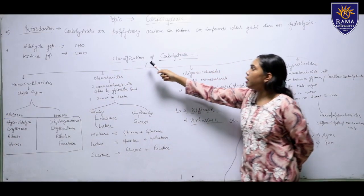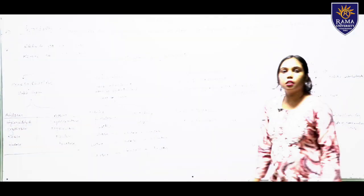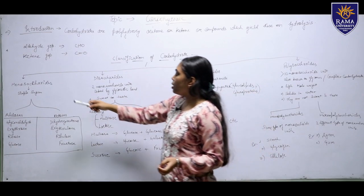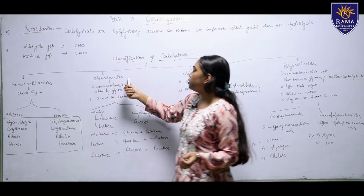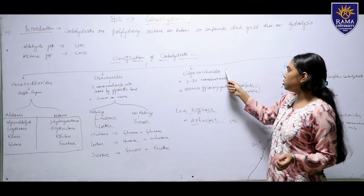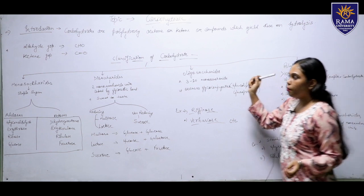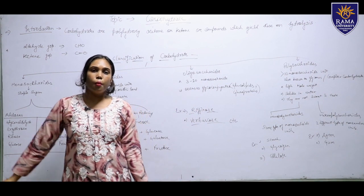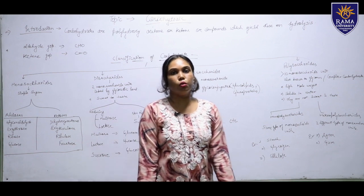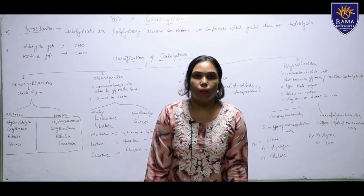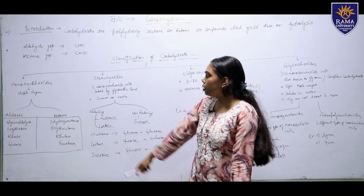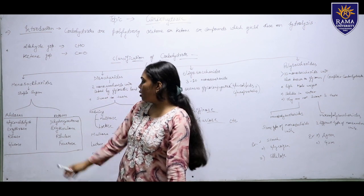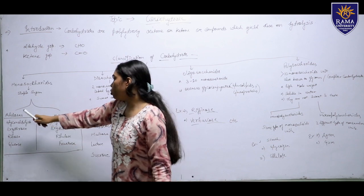Here is the classification of carbohydrates. Carbohydrates are classified into four groups: first is monosaccharide, second is disaccharide, third is oligosaccharide, and fourth is polysaccharide. Monosaccharides have only one sugar group and are also known as simple sugars. Monosaccharides are sub-classified into two groups: aldoses and ketoses.